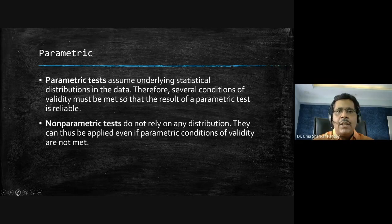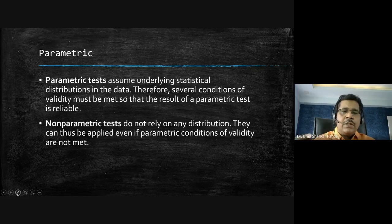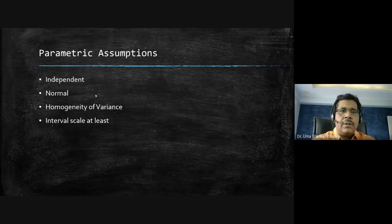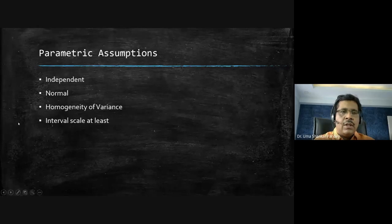Non-parametric tests do not rely on any distribution and can be applied even if parametric conditions are not met. That is why non-parametric tests are simpler and more elegant, though parametric tests are more powerful and can detect very small effects. The four assumptions for parametric tests are: independence of observations, normal distribution, homogeneous variance, and at least interval scale.